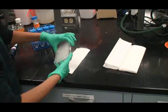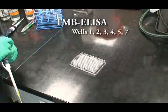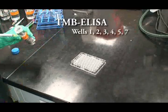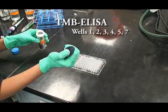Add 150 microliters of TMB ELISA substrate to wells 1, 2, 3, 4, 5, and 7. Add PBS to wells 6 and 8.